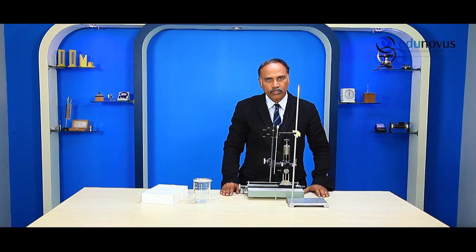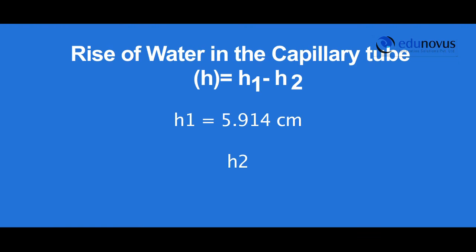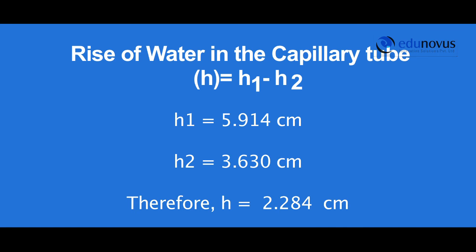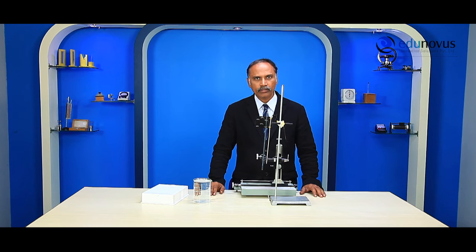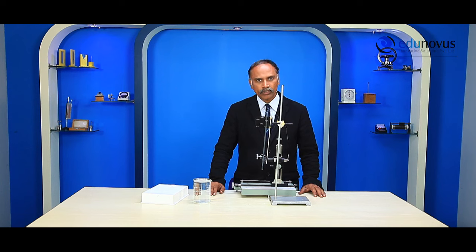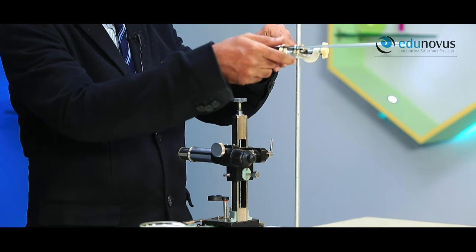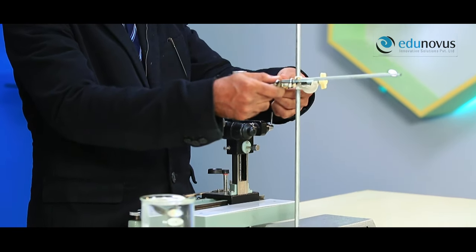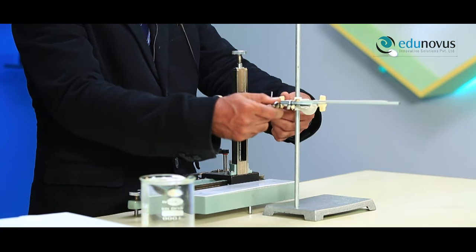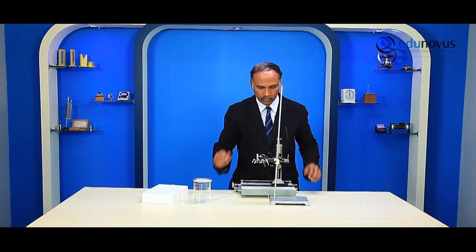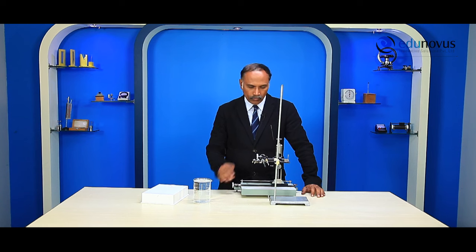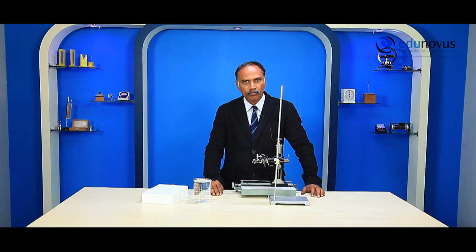The difference of H1 and H2 gives us the capillary rise — note this reading as H. After finding the height of the capillary rise, we need to determine the radius of the bore of the capillary tube. To find the radius of the bore, fix the capillary tube in a horizontal position. Looking through the eyepiece, focus the microscope on the bore of the capillary tube such that the vertical cross wire touches one end of the bore.